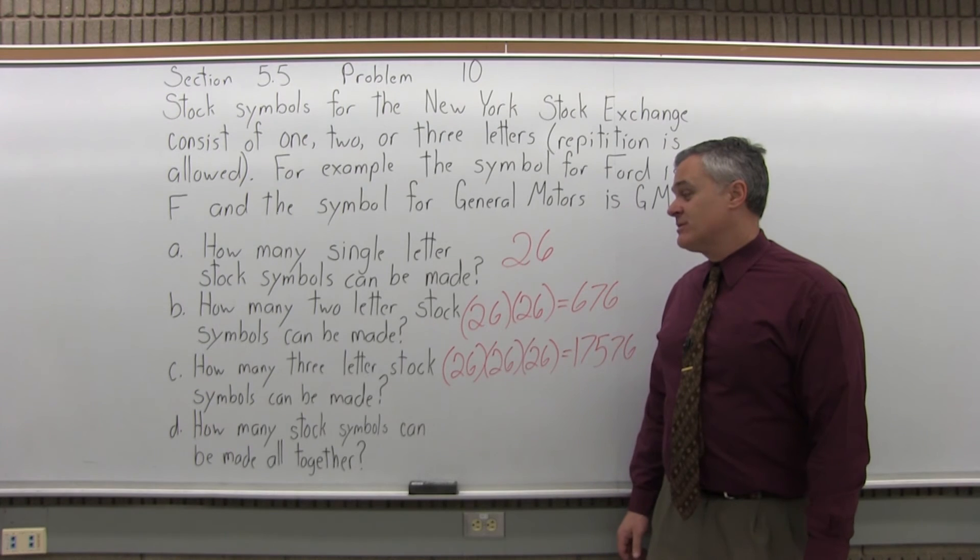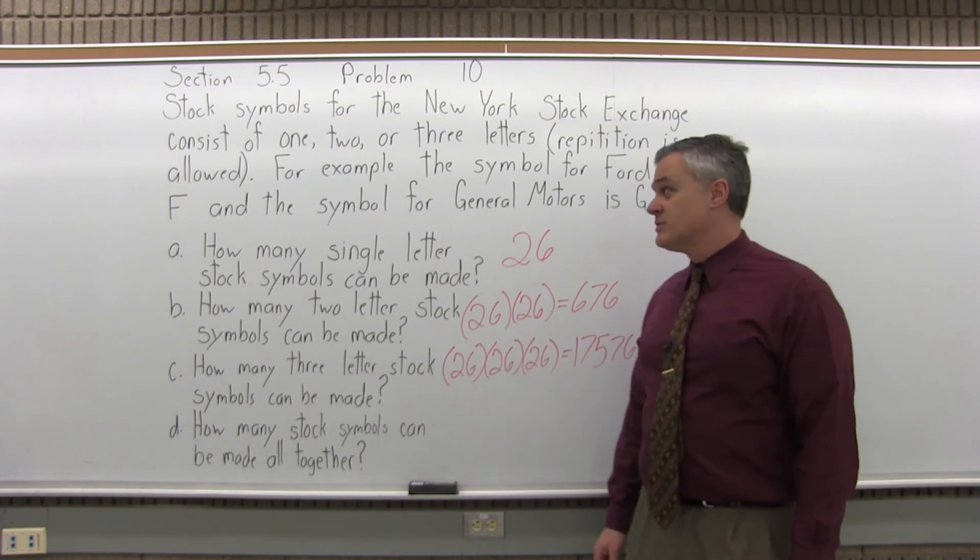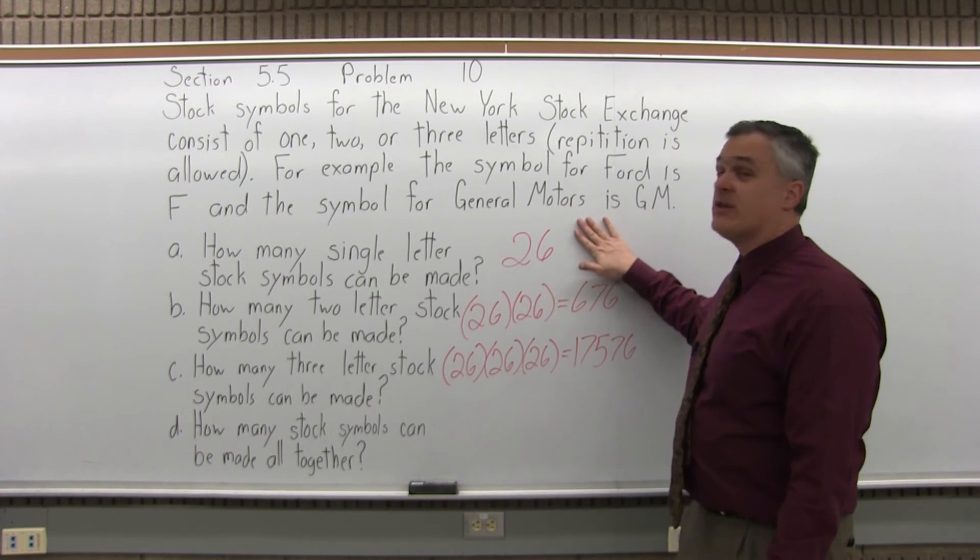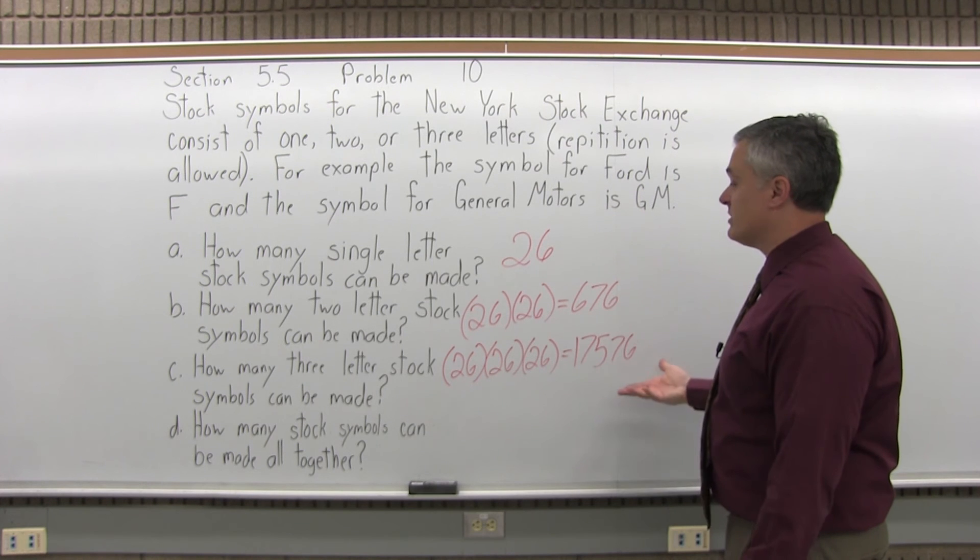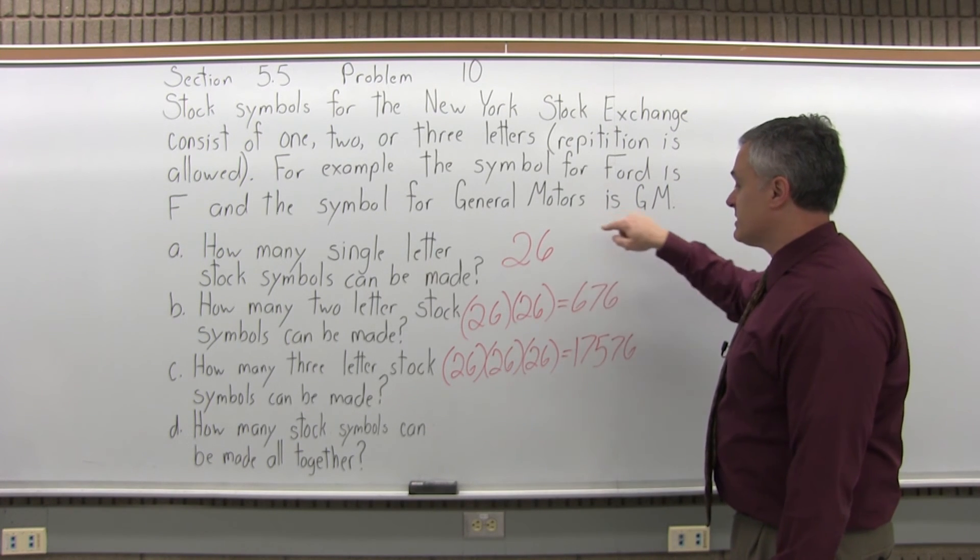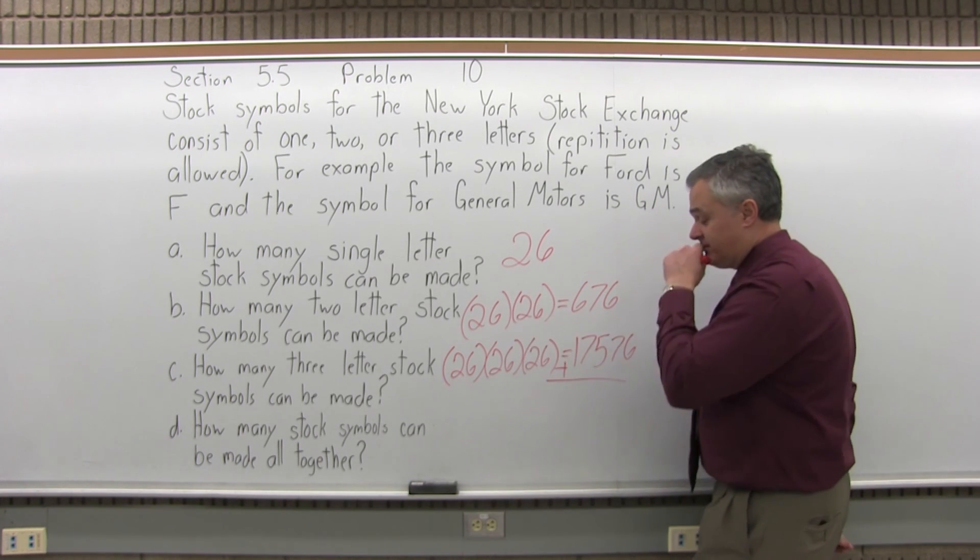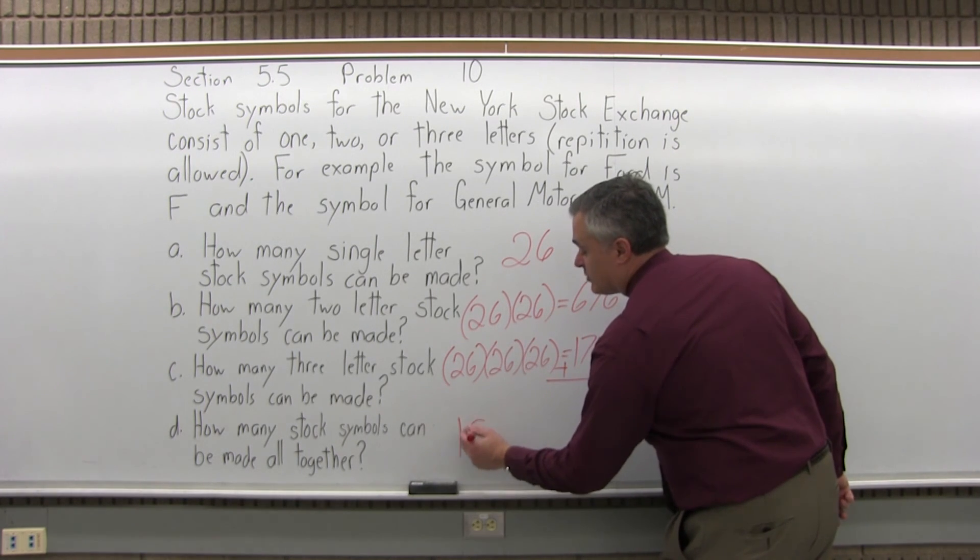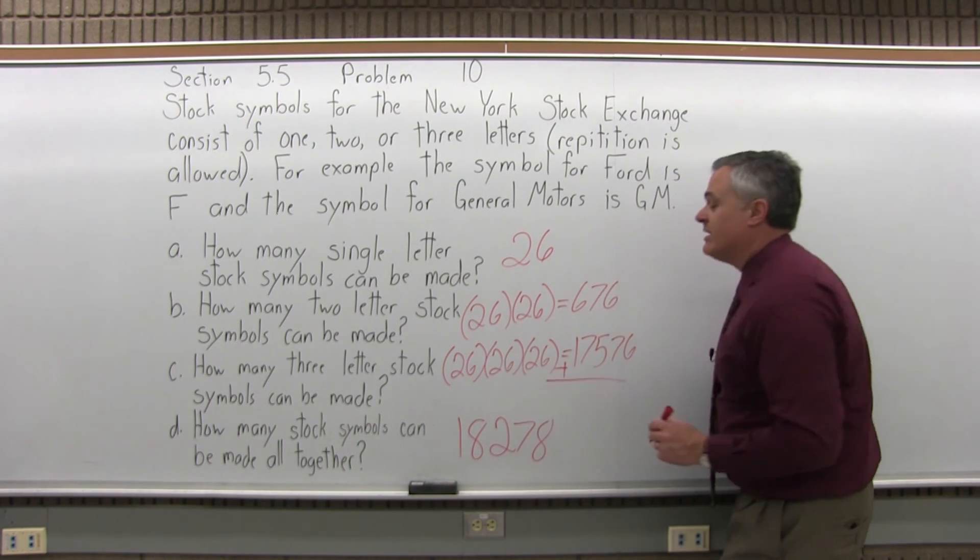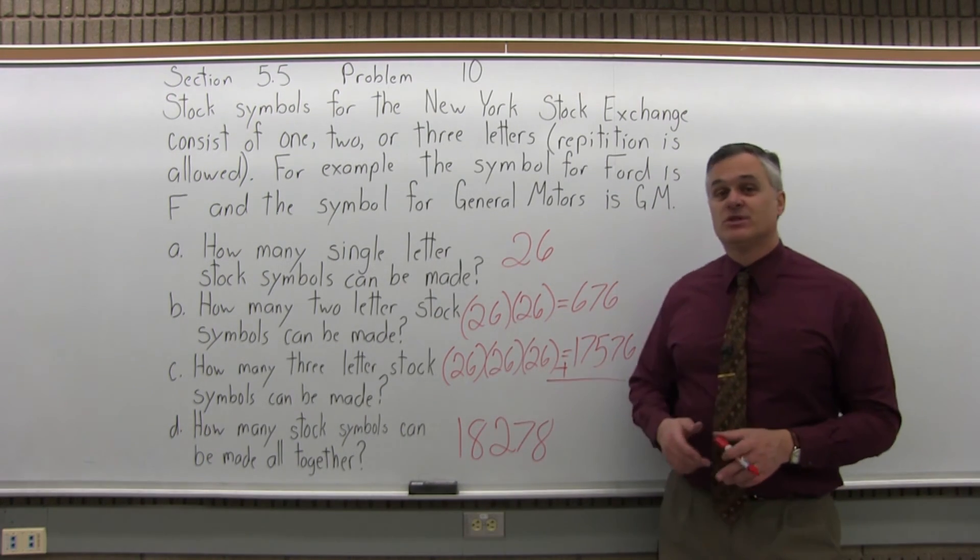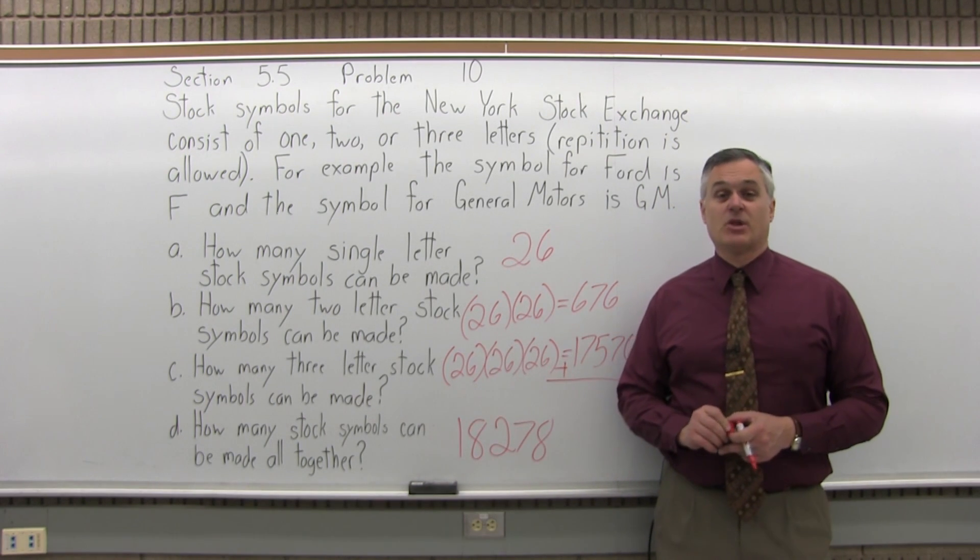And now the last question, how many stock symbols can be made all together? So now basically combine the one-letter stock symbols and the two-letter stock symbols and the three-letter stock symbols, so what you would do is add them together. 26 plus 676 plus 17,576, and if you add those together, it should add up to 18,278 different stock symbols that you can make with the arrangements that they use. And I don't think they're all used up, but they use up a lot of them.